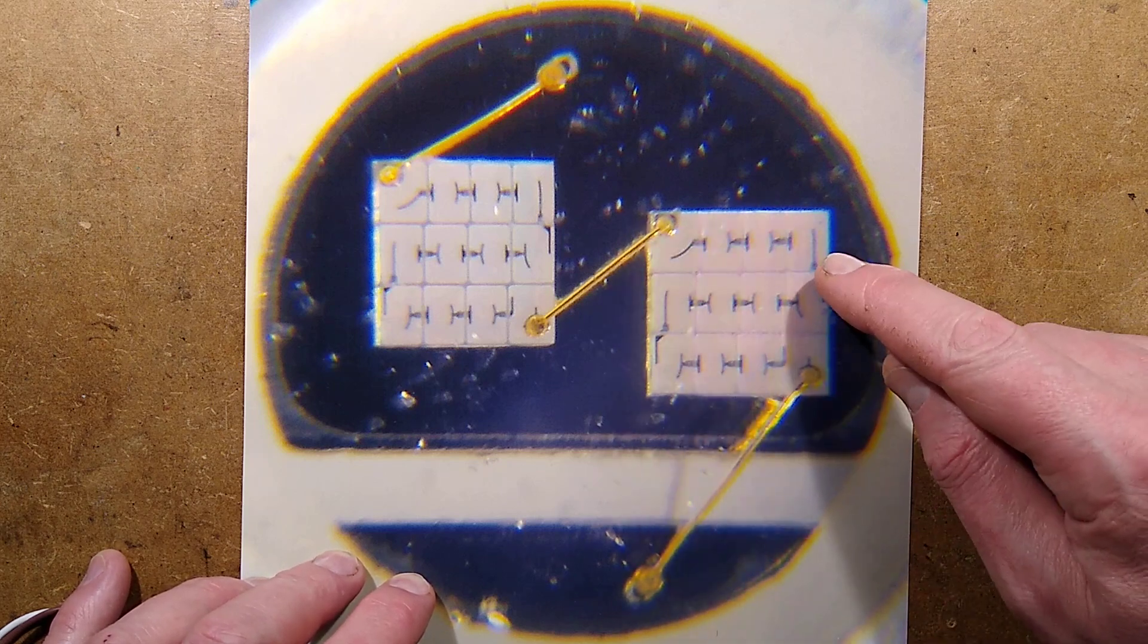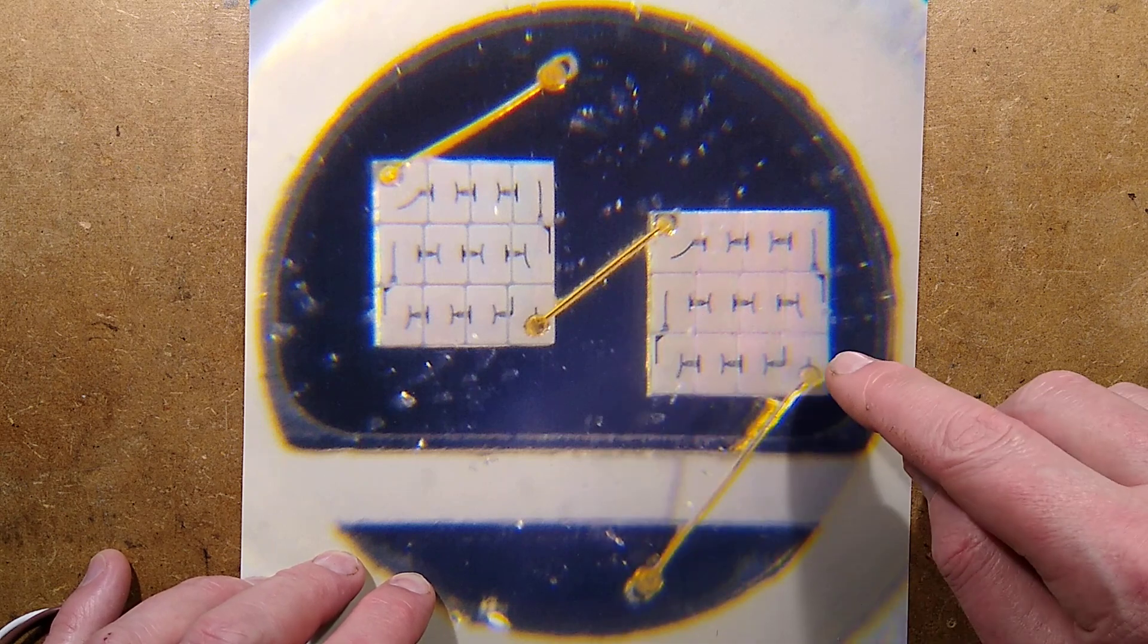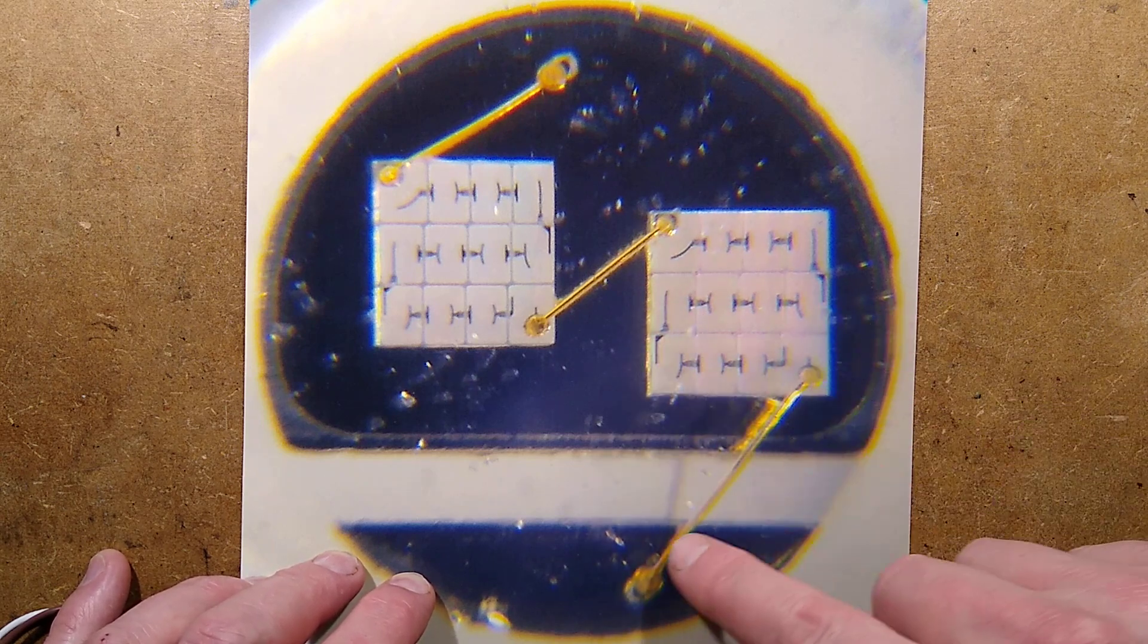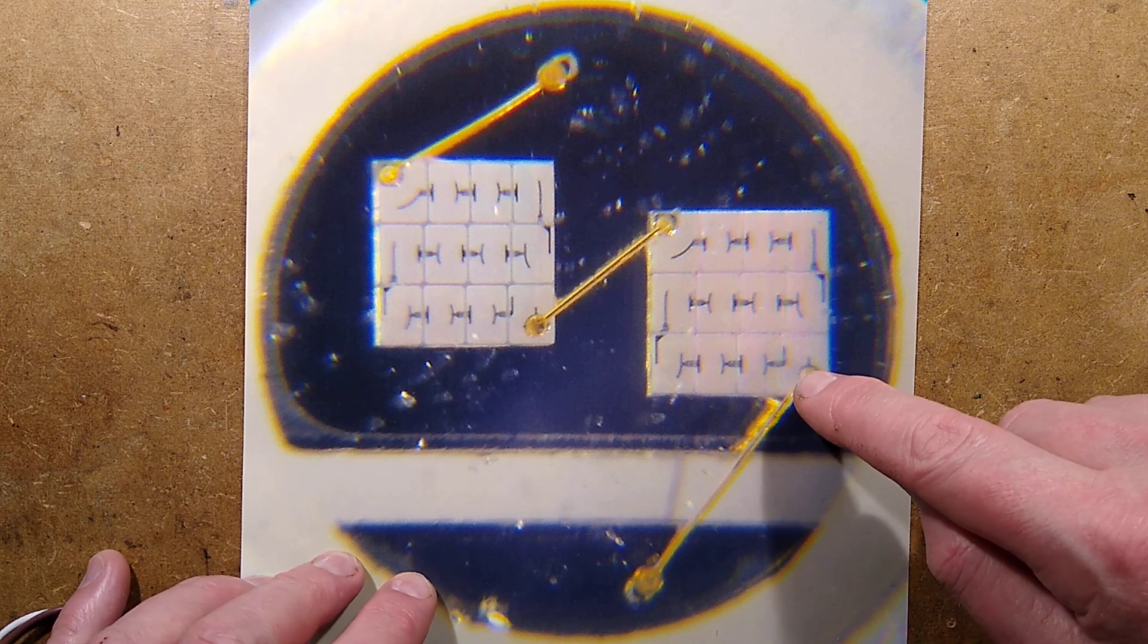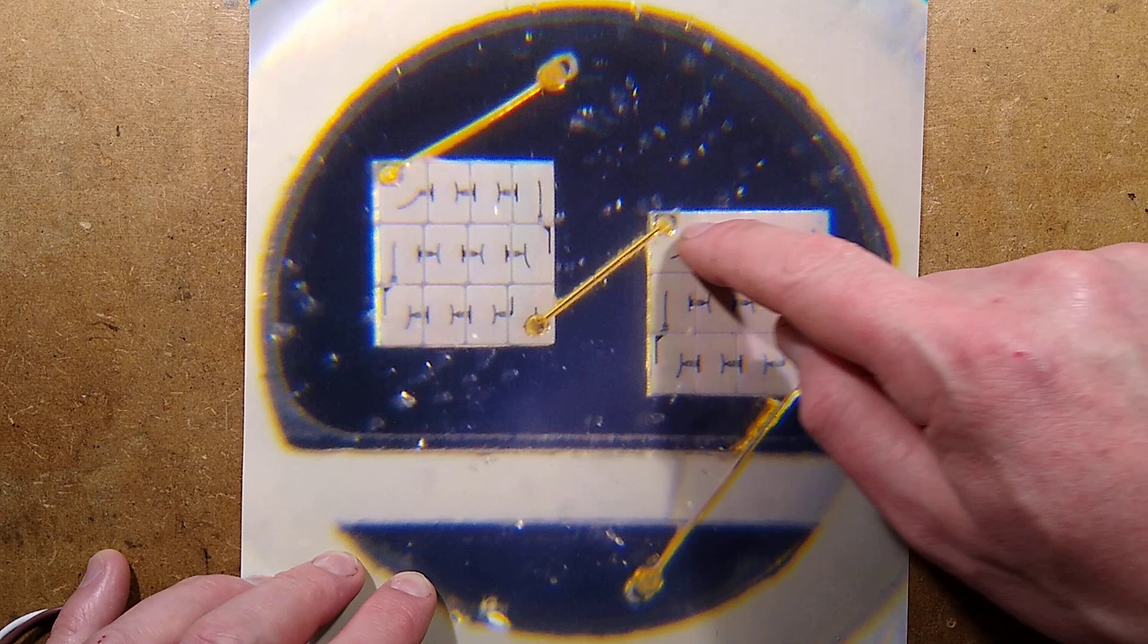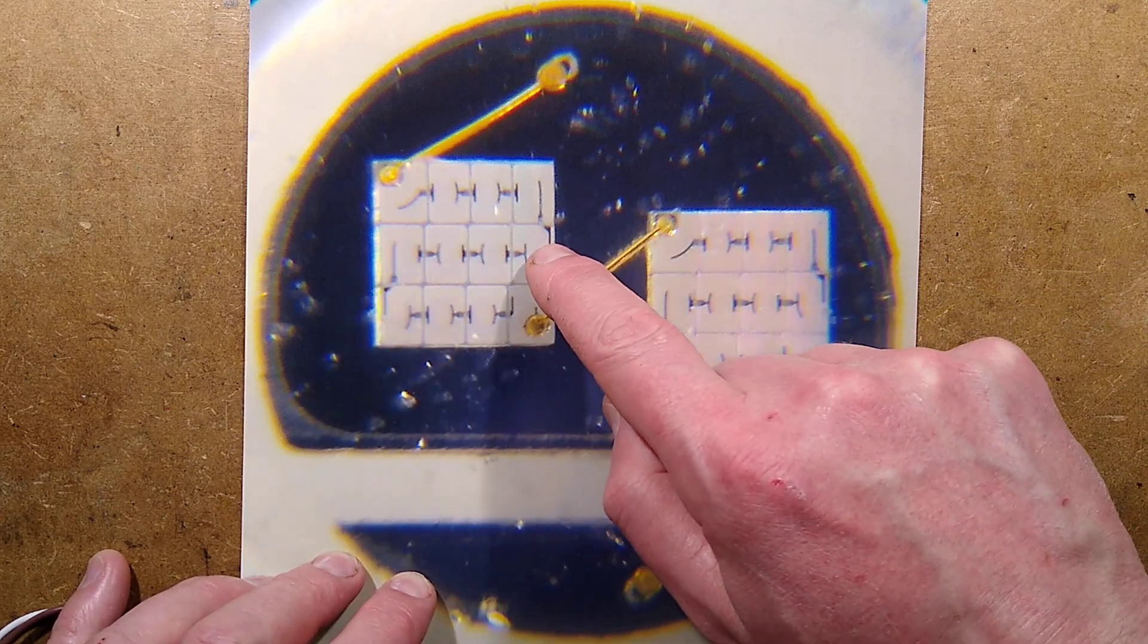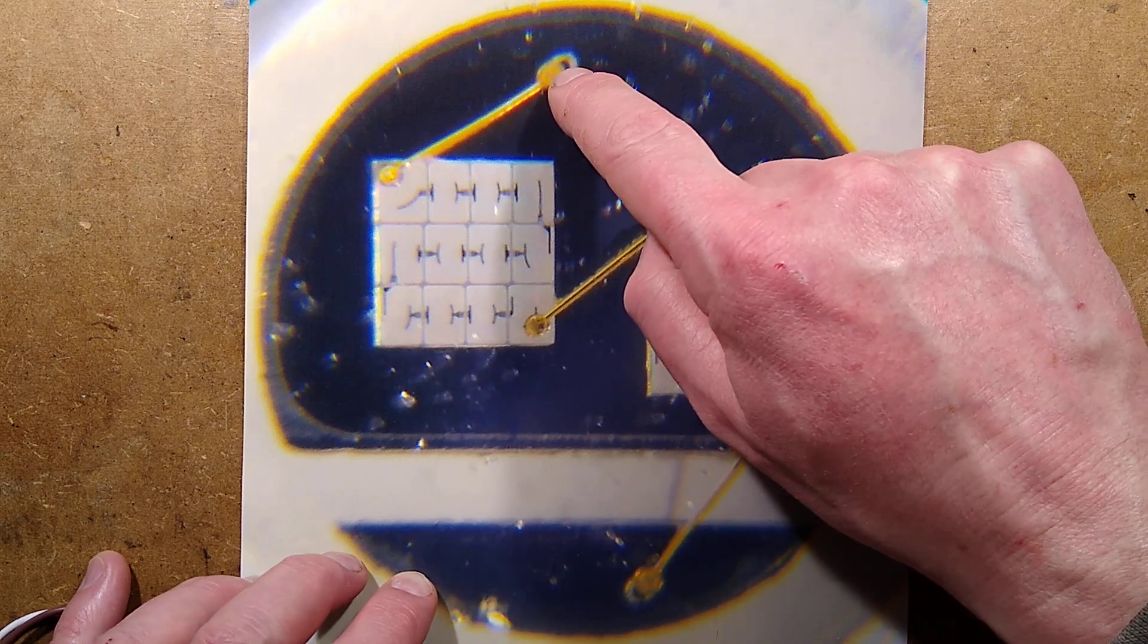But each of these blocks consists of 1, 2, 3, 4 by 1, 2, 3 LEDs. And they're all just coupled in series. So for instance, this gold bond comes on from one connection, goes through all these LEDs, across, through these LEDs, across, through these LEDs, jumps across, down through these ones, up through these ones, and down through these ones, and then to the other connection.